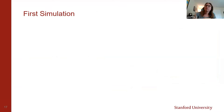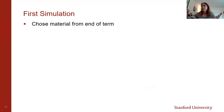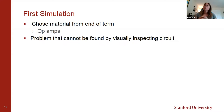For our first simulation, we chose material at the end of the term — op-amps — because we wanted students to be as advanced as possible in their debugging skills. We also wanted something that couldn't be found just by looking at the circuit. We ended up choosing a problem where there was a loose wire in the feedback loop, so you couldn't visually see what was wrong — you had to actually take measurements.